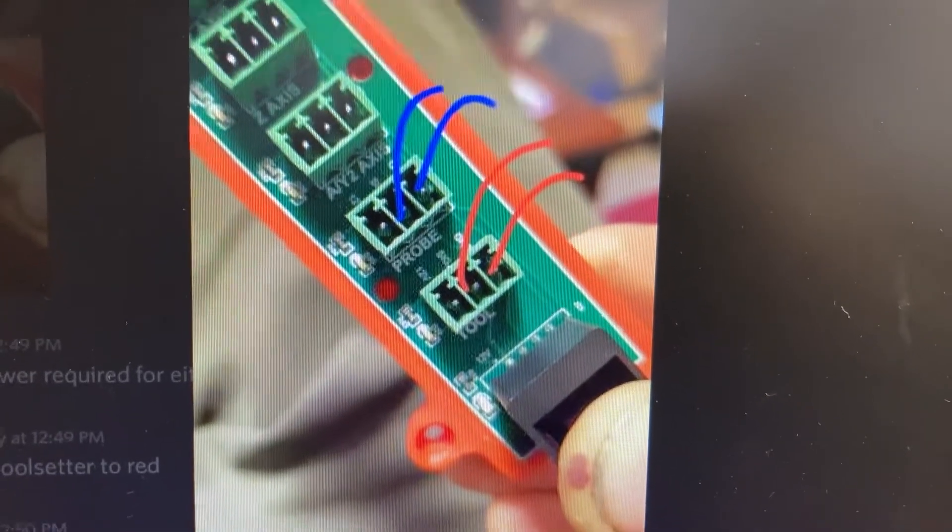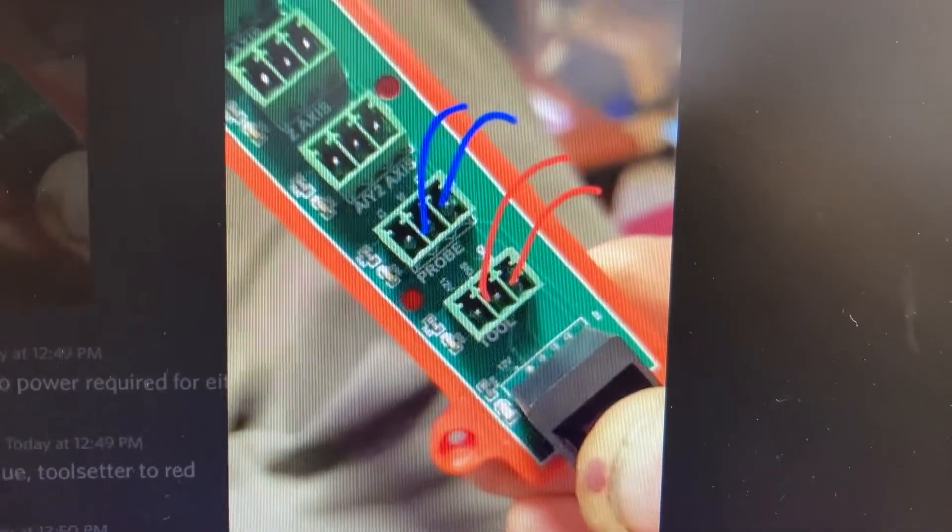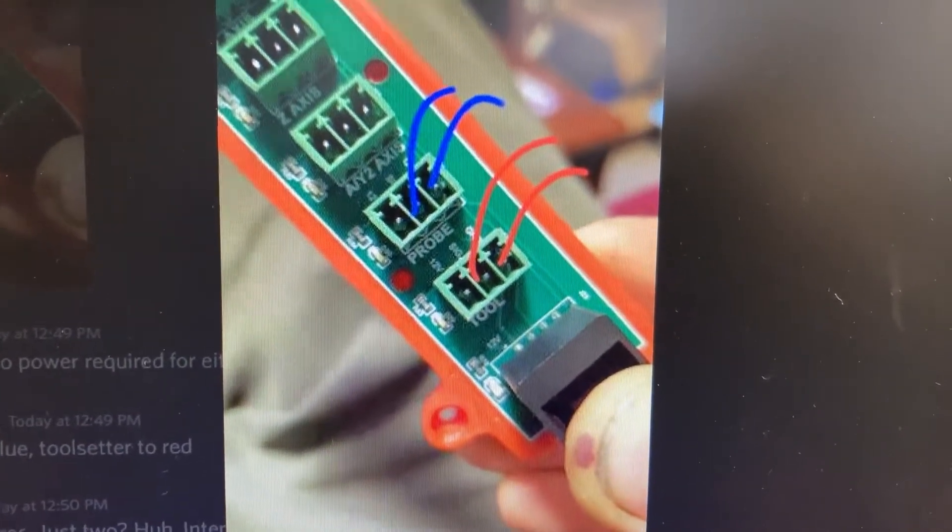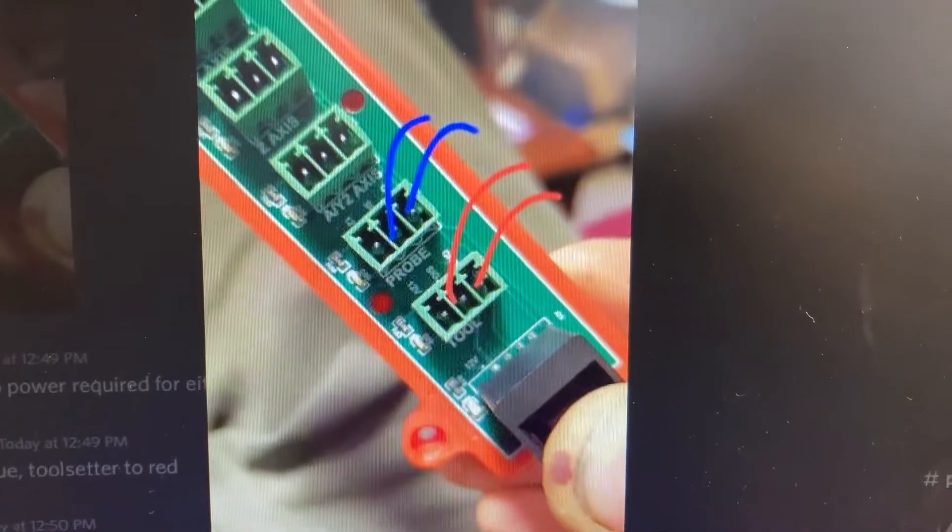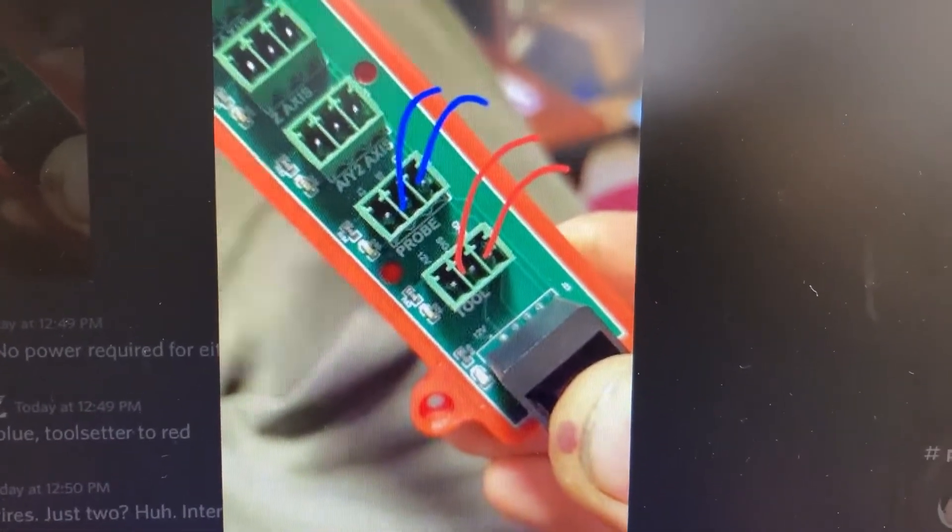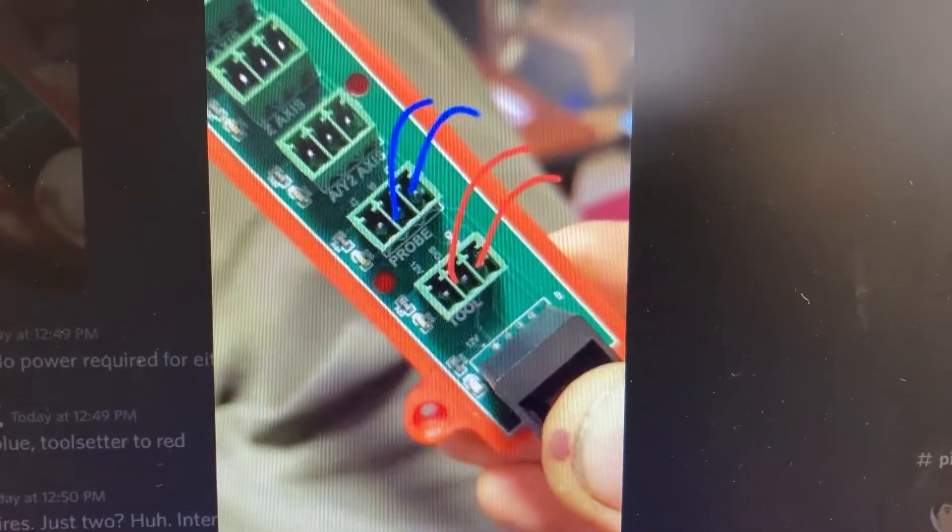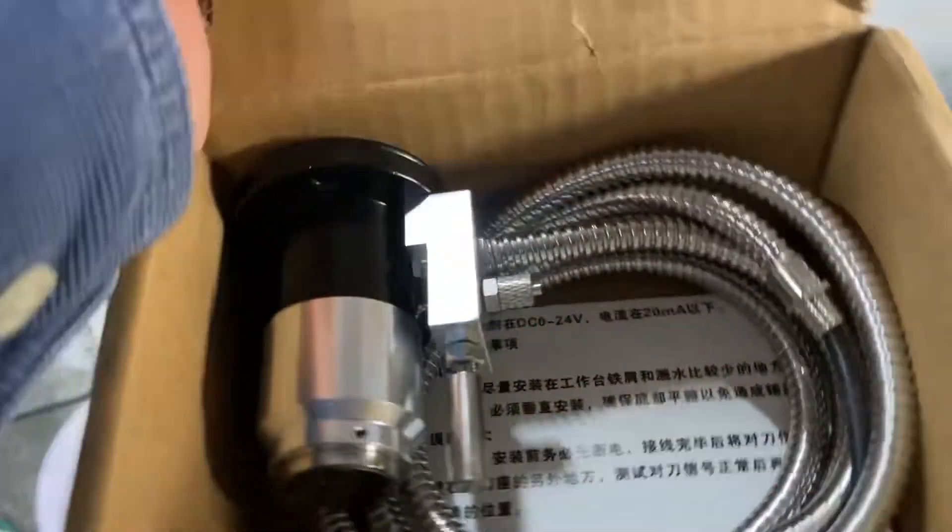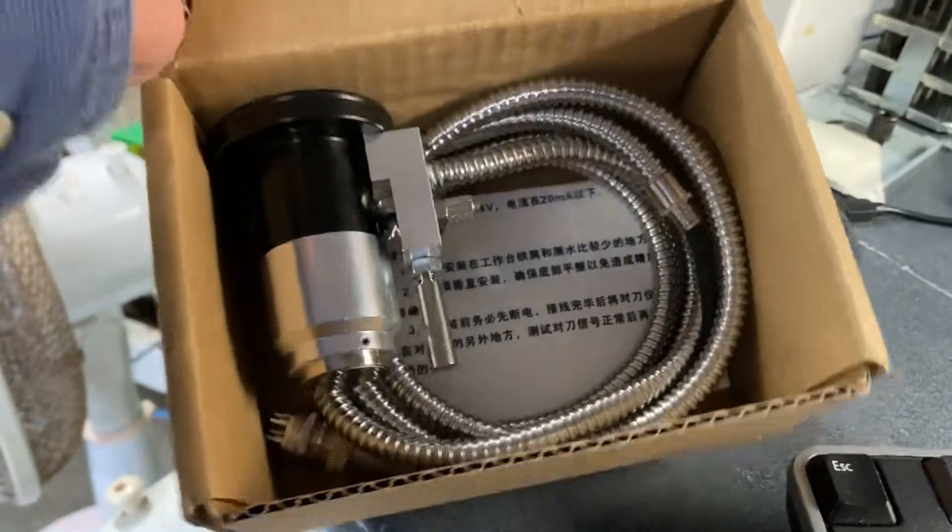So probe would be for your touch plate, which is what we're talking about. You basically have plus and minus wires to make a circuit so there's continuity. And then you've got tool setter, which would look like this. I'm going to wire this up next and make a video on that when I'm done.